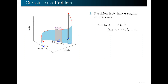For the partition part, recall that the curve c is parametrized by the variable t, where t lies in the closed interval [a, b]. Hence, we start by dividing the closed interval [a, b] into n sub-intervals of equal length. This is usually called a regular partition. We denote the endpoints of the sub-intervals by t₀, which is just a, t₁, and so on, up to tₙ, which is just b.